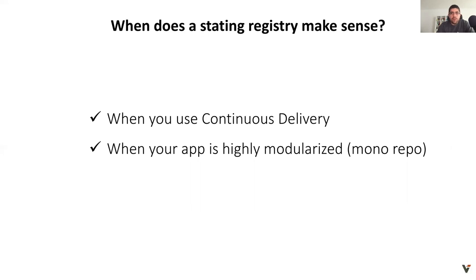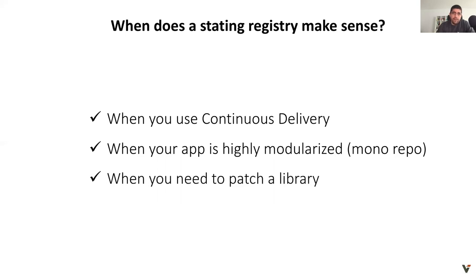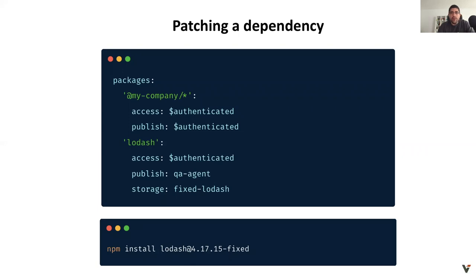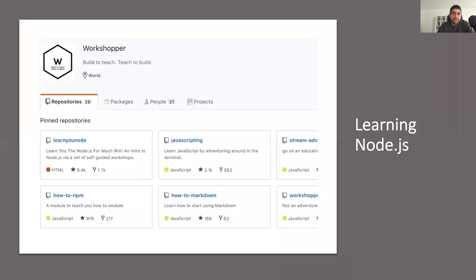There are also mono repositories, which can rapidly grow with a large number of modules and releases. For instance, if you have a design system used across all of your organization. Another scenario: when you need to patch a library — if one of your dependencies has a bug and you know how to fix it but the official patch never arrives, you can publish a patch version to your private registry and use it while the real patch is being developed. You simply change the version in your project once the real patch is published.